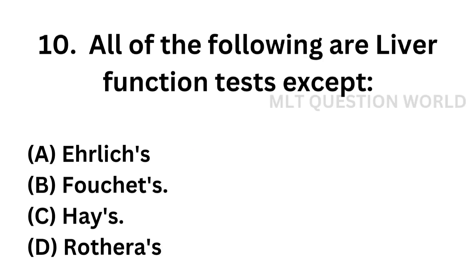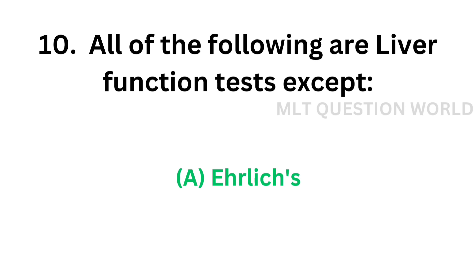Question number ten: All of the following are liver function tests, except — Option A: Ehrlich test, Option B: Fouchet's test, Option C: Hay's test, Option D: Rothera's test. The correct answer is Option A — Ehrlich test. Ehrlich test is used for urobilinogen, i.e., it is not a liver function test.